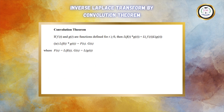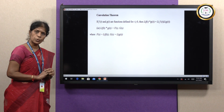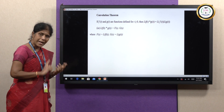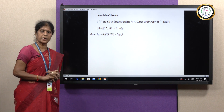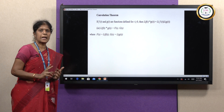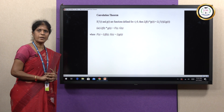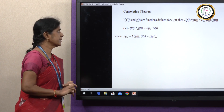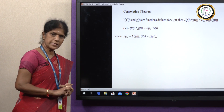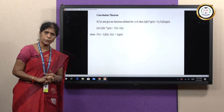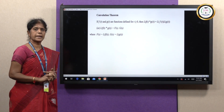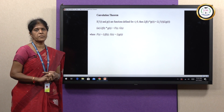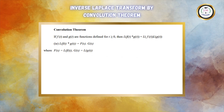Next, we are going to define the convolution theorem. If f(t) and g(t) are two functions, then the Laplace transform of the convolution of two functions is equal to the product of the Laplace transforms. This is called the convolution theorem. That is, L{f(t) * g(t)} = F(s)·G(s), where F(s) = L{f(t)} and G(s) = L{g(t)}.